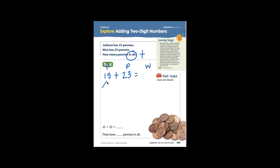We can break this into expanded form. 15 equals 10 plus 5, and 23 in expanded form is 20 plus 3.